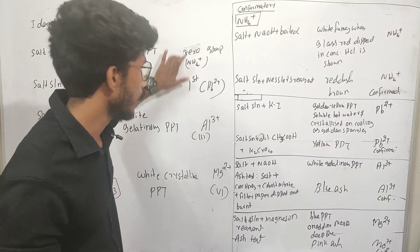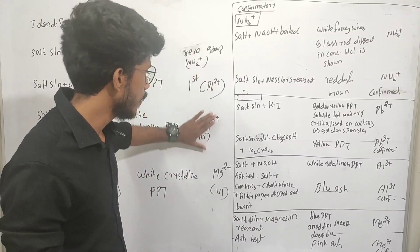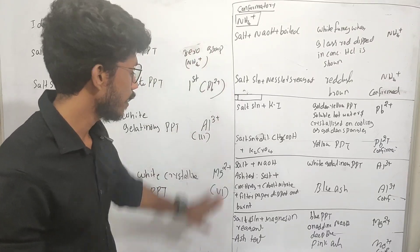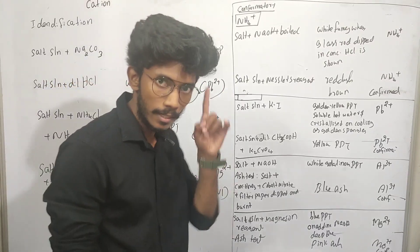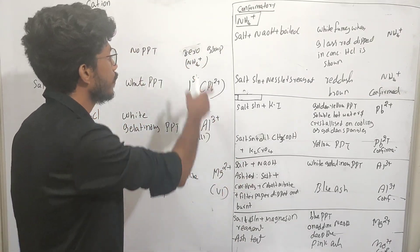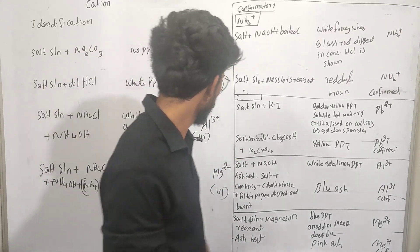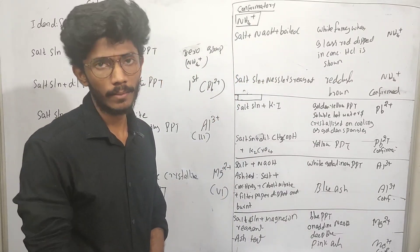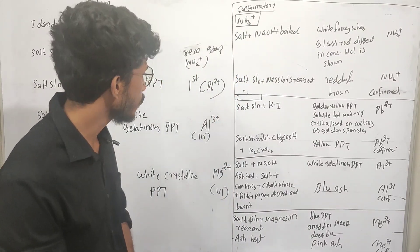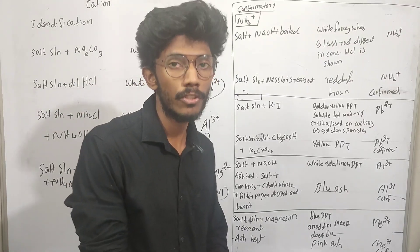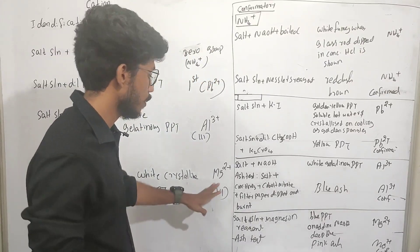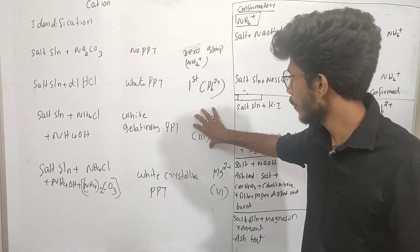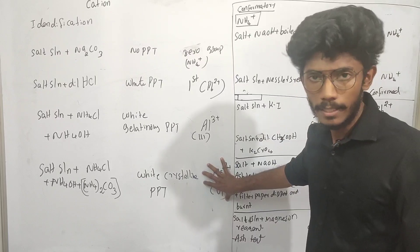Zero group is ammonia, first group is lead, third group is aluminium, sixth group is magnesium. So this is the cation group. We will study zero group, first group, third group, and sixth group. Zero group is ammonia, first group is lead, third group is aluminium, sixth group is magnesium.